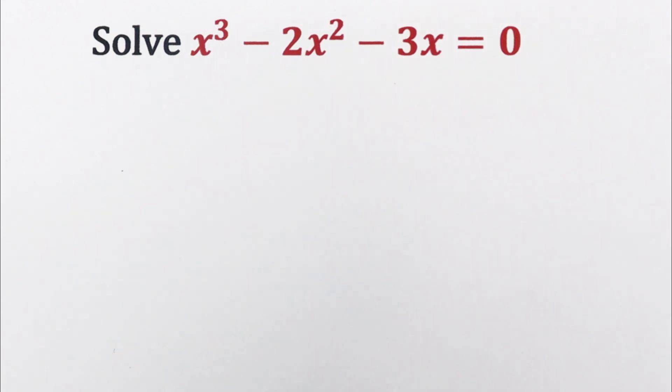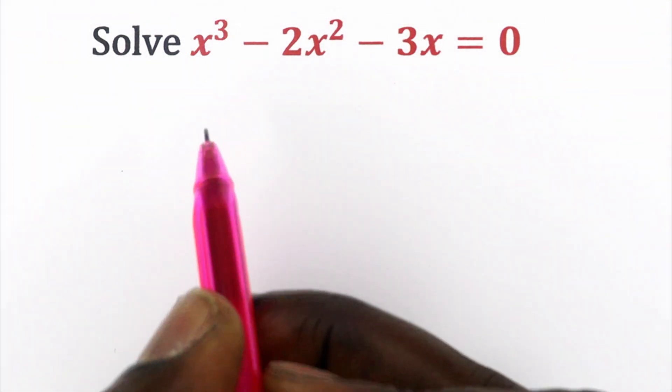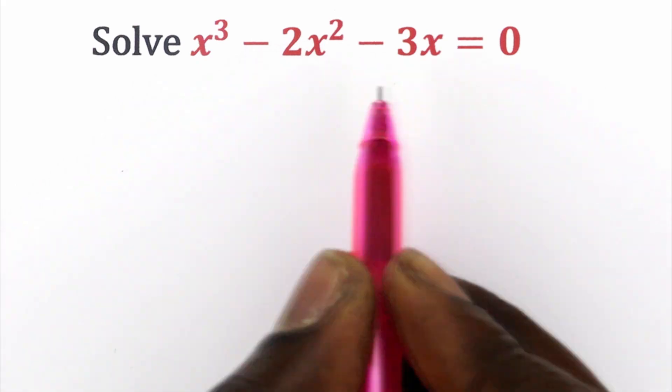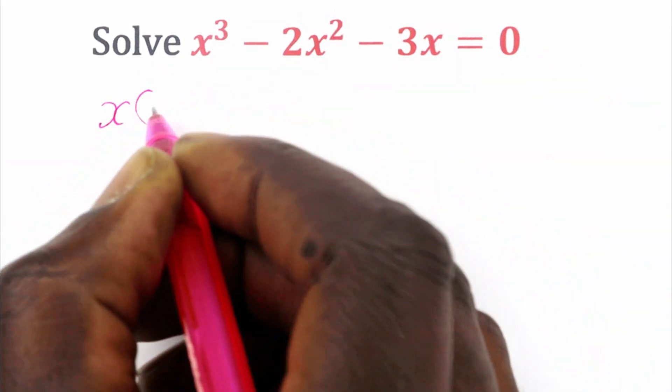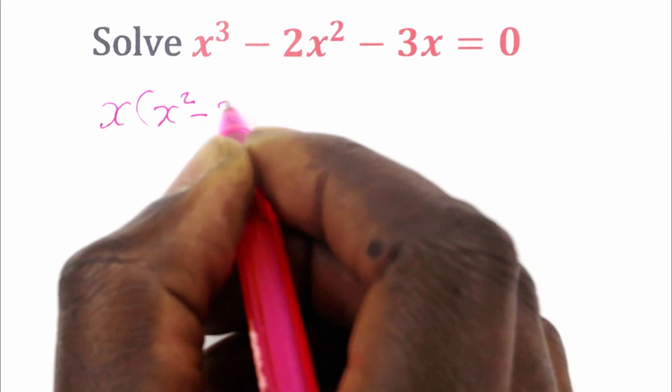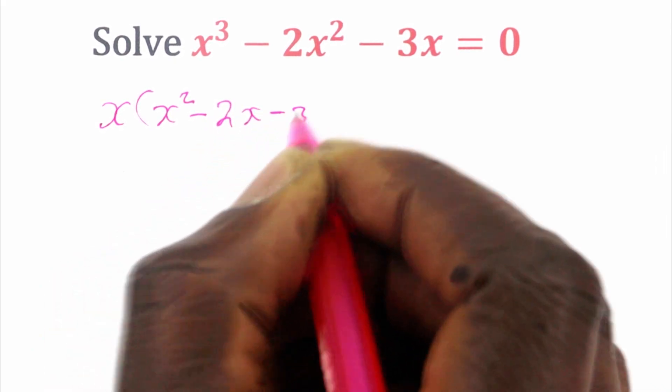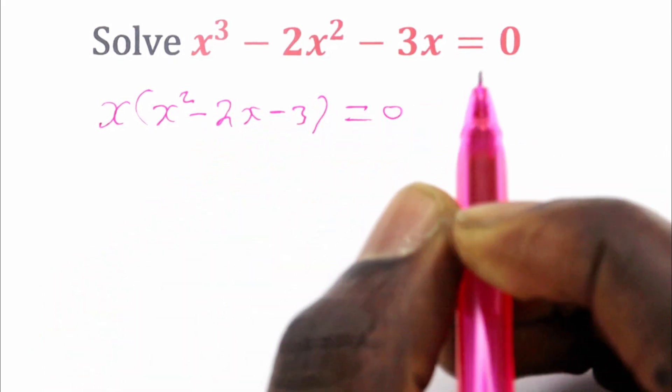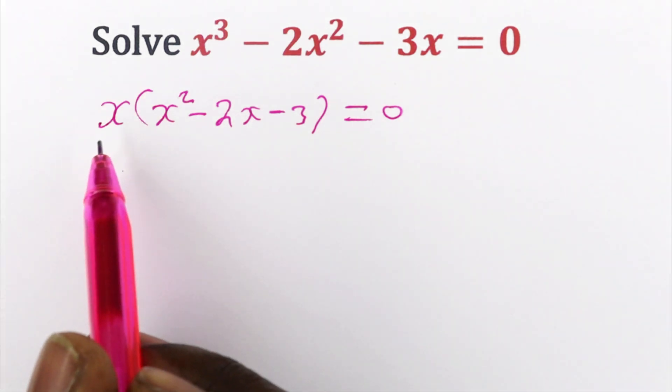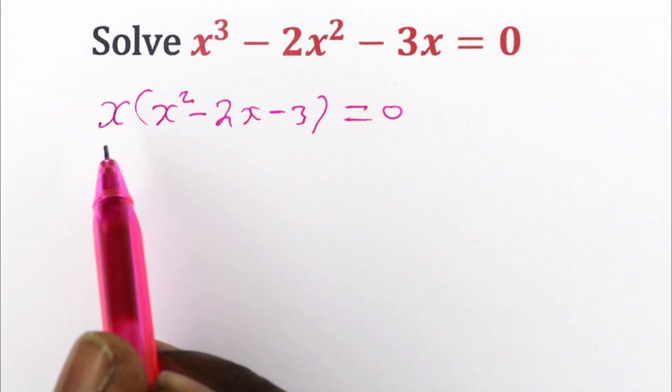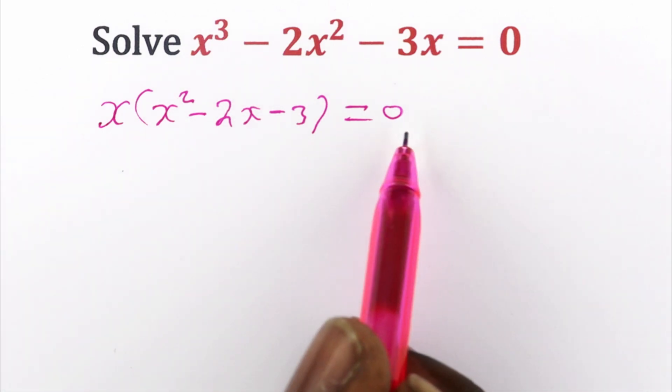So the first thing you want to do is check if there is a common factor, and in this case there is a common factor x. So write that as x into x squared minus 2x minus 3 is equal to 0. So the product between x and this number here is actually equal to 0.